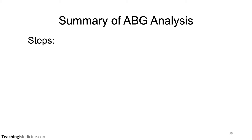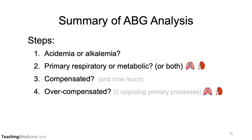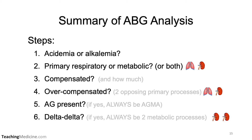Here's a summary of all the steps for a complete ABG analysis. Step 1: Is acidemia or alkalemia present? Step 2: Is the primary disorder respiratory or metabolic, or perhaps both? Step 3: Is it compensated, and if so, is it partial or complete? Step 4: Does it appear overcompensated? If yes, there will be two opposing primary processes. Step 5: Is an anion gap present? If yes, there will always be an anion gap metabolic acidosis. Step 6: Is a delta-delta present? If yes, there will always be two metabolic processes. Note: two kidneys appear beside step 6 because both processes are metabolic, whereas steps 2 and 4 involve a mixture of respiratory and metabolic.